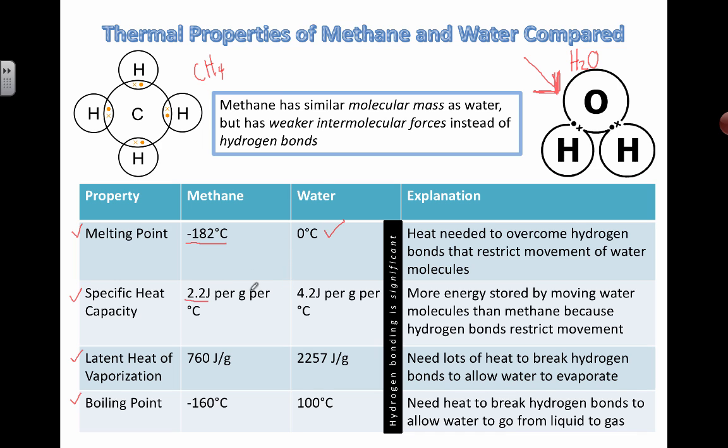This is not so significant. 2.2 joules per gram per degree Celsius versus 4.2 joules per gram per degree Celsius. This specific heat capacity, but in terms of the melting point, and in terms of the latent heat of vaporization, and also for the boiling point, you can see that water is just a little bit stronger at holding itself together,